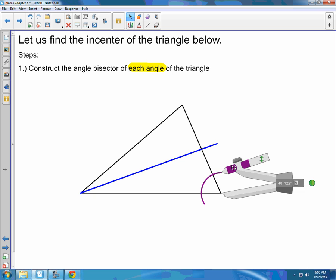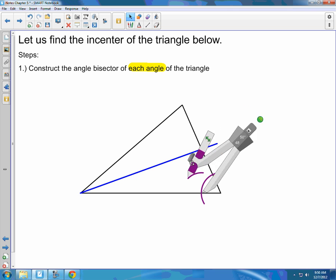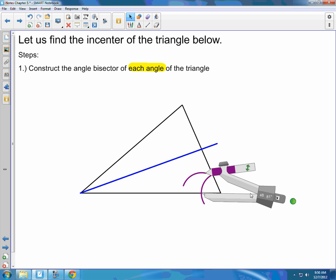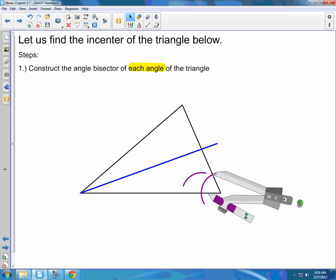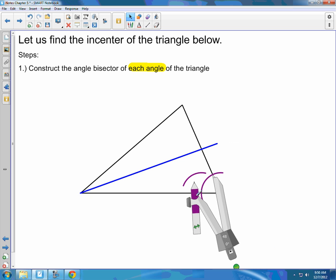Again, draw an arc that intersects both sides of that angle. Center your compass on one of those intersection points and draw an arc inside that angle. Repeat, don't change that opening of that compass. And your second arc should cross your third arc.